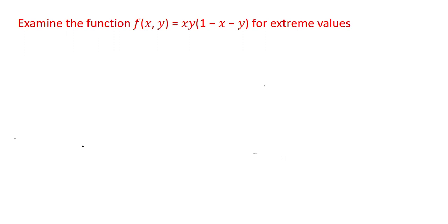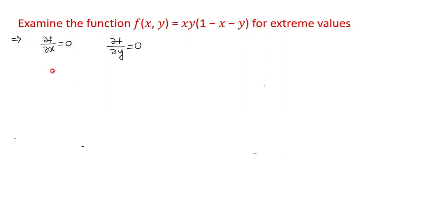Before we start with the solution, the procedure for finding extreme values is that we first find the first-order derivatives — that is, ∂f/∂x = 0 and ∂f/∂y = 0 — and find the values of x and y satisfying these two conditions. Those points are called critical points, and this is called the necessary condition for any function to have extreme values.